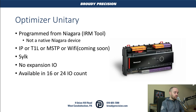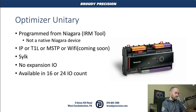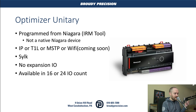The Optimizer Unitary is programmed from Niagara using the IRM tool. It is not a native Niagara device, so it doesn't run Niagara on it, but you program it from within Niagara — whether that's on your local machine or through a JACE. The Optimizer Unitary has the most flexibility for communication: IP over standard Ethernet, T1L (twisted pair Ethernet over a single pair), BACnet MSTP, and a Wi-Fi option coming soon that will talk BACnet over IP. They also have Silk, no options for expansion IO, and they're available in 16 and 24 IO count parts.